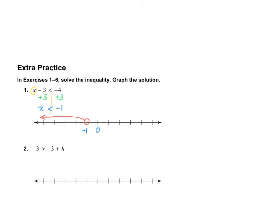You go ahead and do number 2 on your own, and then turn the video back on to check your answer. Okay, I got 0 is greater than h. Now, whenever I have a variable on the right-hand side, I always like to flip it around. So if I flip this around, then it's the same as saying h is less than 0. So either way, we have an open circle at 0, and we're heading down.